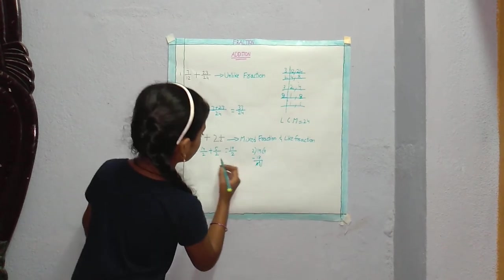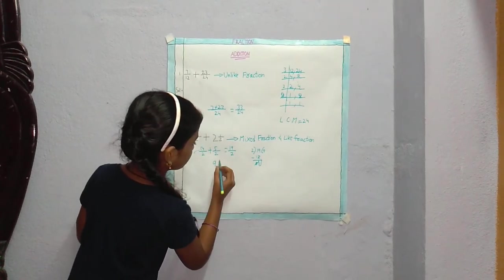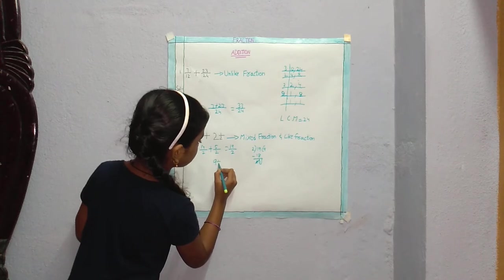9, 1 by 2 is the answer. 9 is the whole number. 1 is the numerator. And 2 is the denominator.